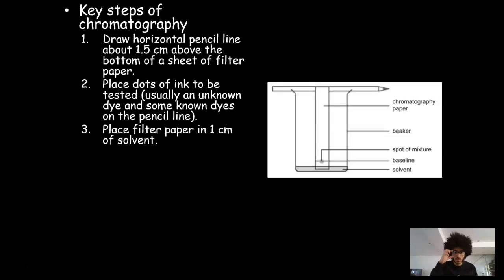Then you have to place the filter paper in one centimeter of solvent. Now the solvent is usually water. Sometimes you'll have a mixture where the dots and the inks are insoluble in water, in which case you have to use a different solvent, usually ethanol. So just be aware that sometimes the solvent may be different. Then you have to literally write that the solvent will separate the different dyes.